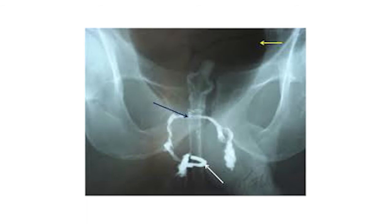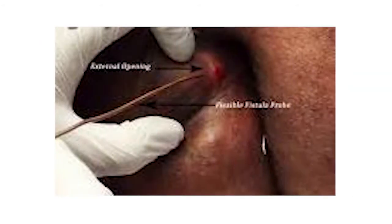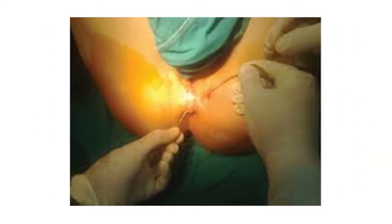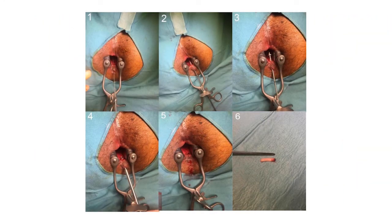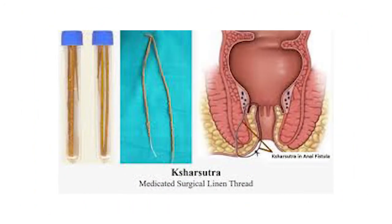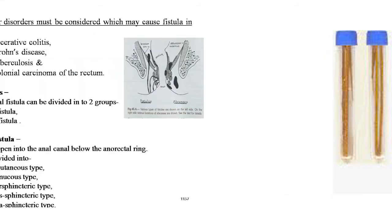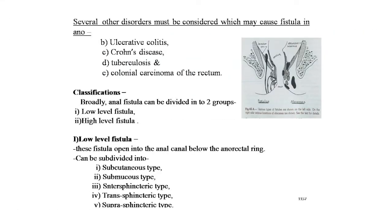An X-ray fistulogram image shows a typical fistulogram of a horseshoe fistula. This is a probing image in fistula in ano performed for a low-level fistula, and the ksha sutra has very great significance in the treatment of fistula in ano, as it definitely avoids recurrence. Several other disorders must be considered as causes of fistula in ano: ulcerative colitis, Crohn's disease, tuberculosis, and carcinoma of the rectum — all considered secondary causes.